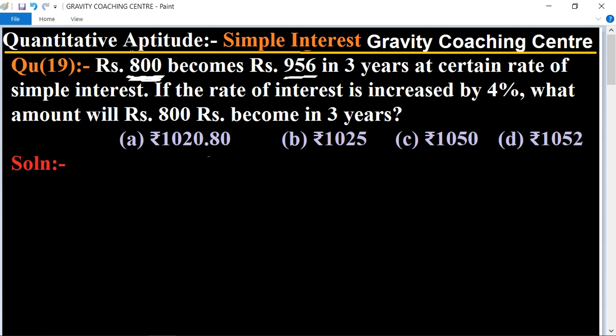For a certain rate of interest, so first of all we will find the certain rate of interest. Here given principal equal to 800 and amount equal to 956, so interest equal to its formula amount minus principal equal to 956 minus 800 equal to 156, which is the interest.